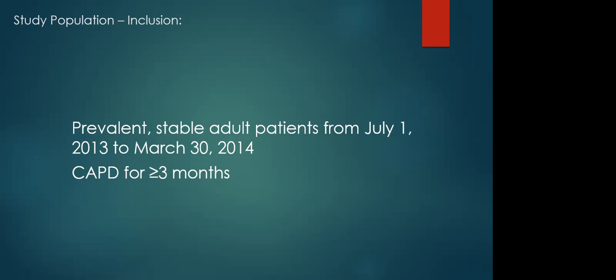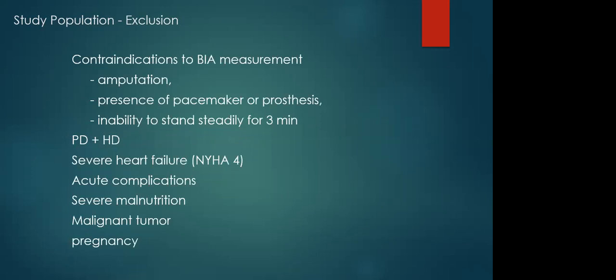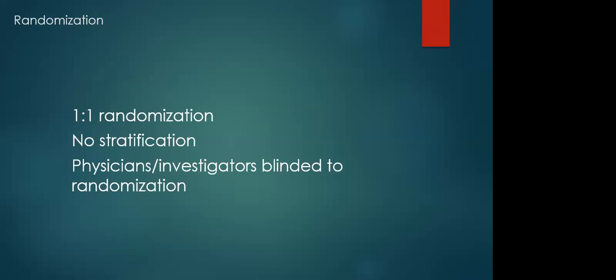The study included all prevalent and stable adult patients from July 1st, 2013 to March 30th, 2014, all patients who had continuous ambulatory PD for at least three months. The exclusion criteria were contraindications to BIA measurements, for example amputation, presence of a pacemaker or prosthesis, or inability to stand steadily for three minutes, concomitant dialysis modalities, severe heart failure NYHA class 4 symptoms, acute complications, severe malnutrition, malignant tumor, or pregnancy.